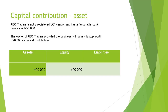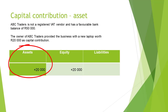The owner of a business does not necessarily contribute cash to the business. So, if the owner, for example, contributed a new laptop worth 20,000 rand as a capital contribution, we will still credit capital and equity will increase with 20,000 rand, and assets will increase with 20,000 rand since laptops will increase. The computer equipment account will be debited with 20,000 rand.